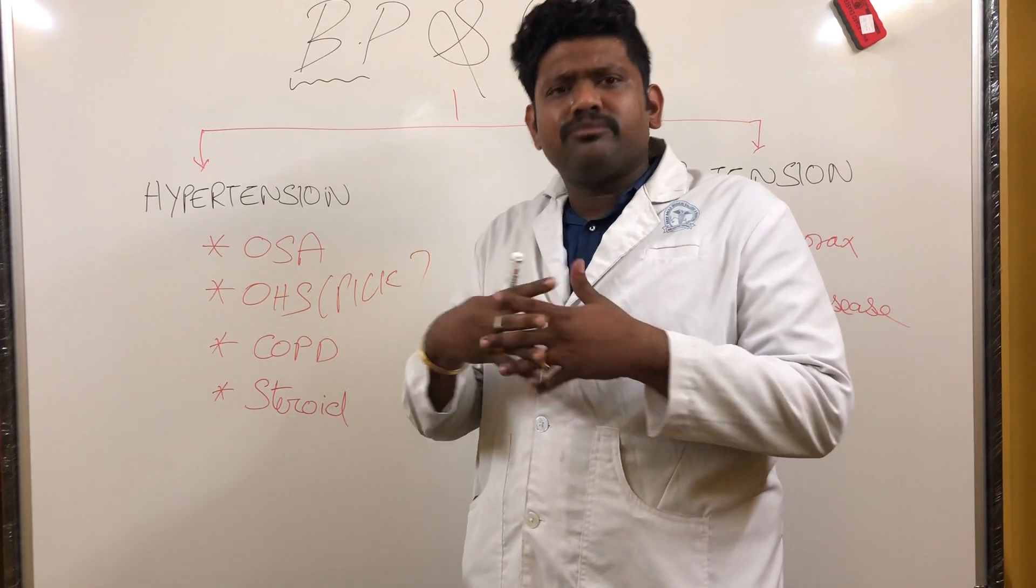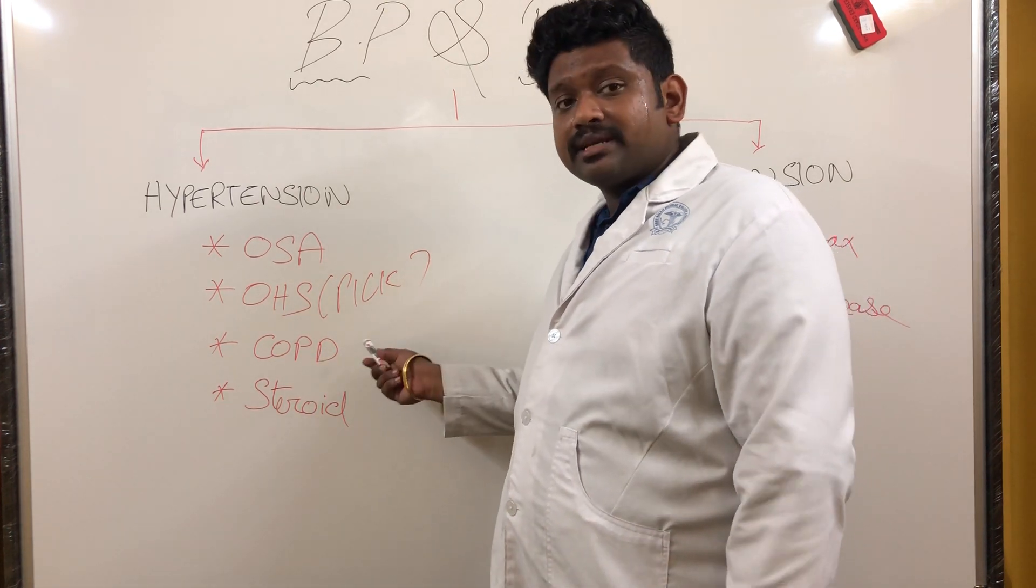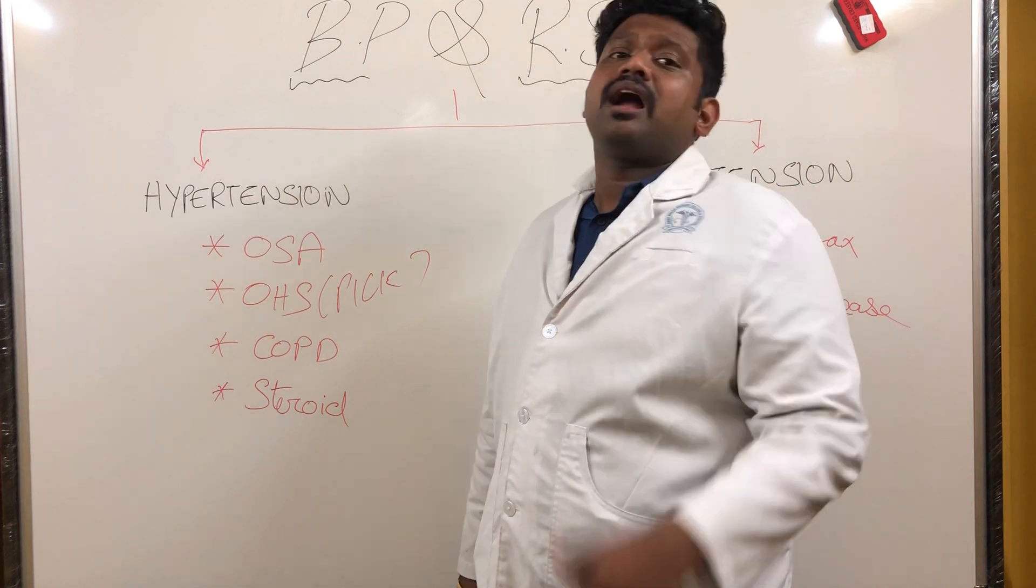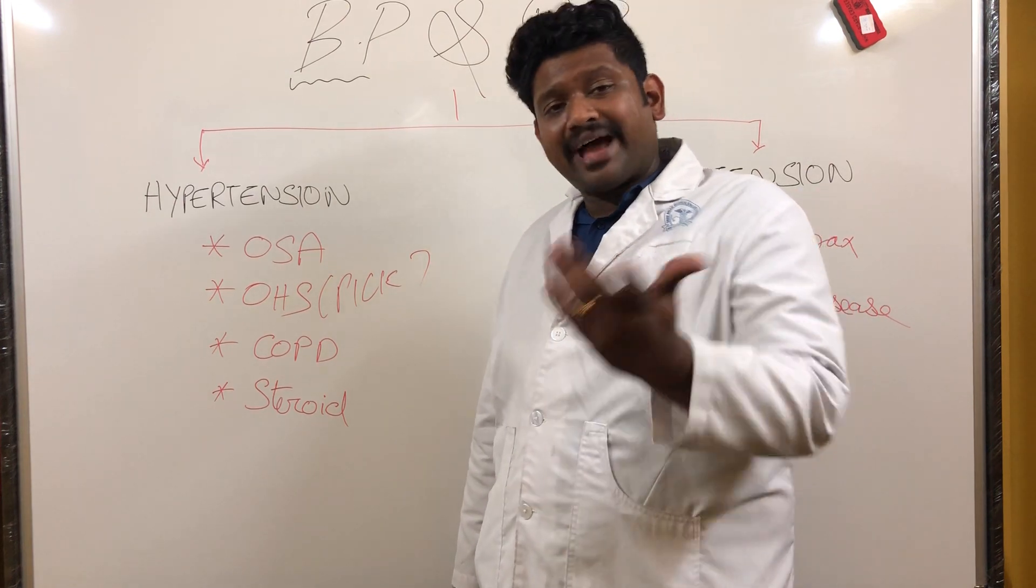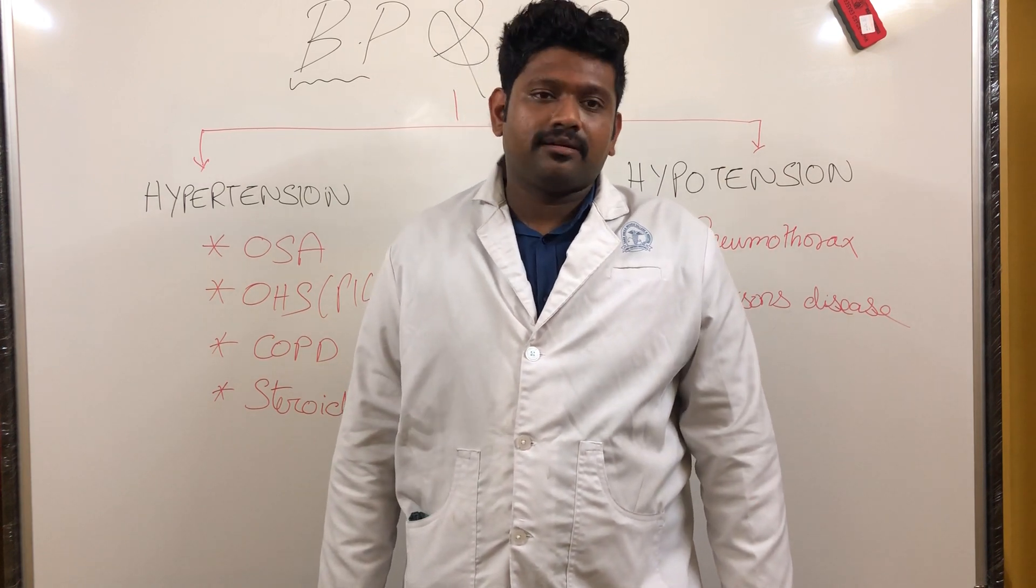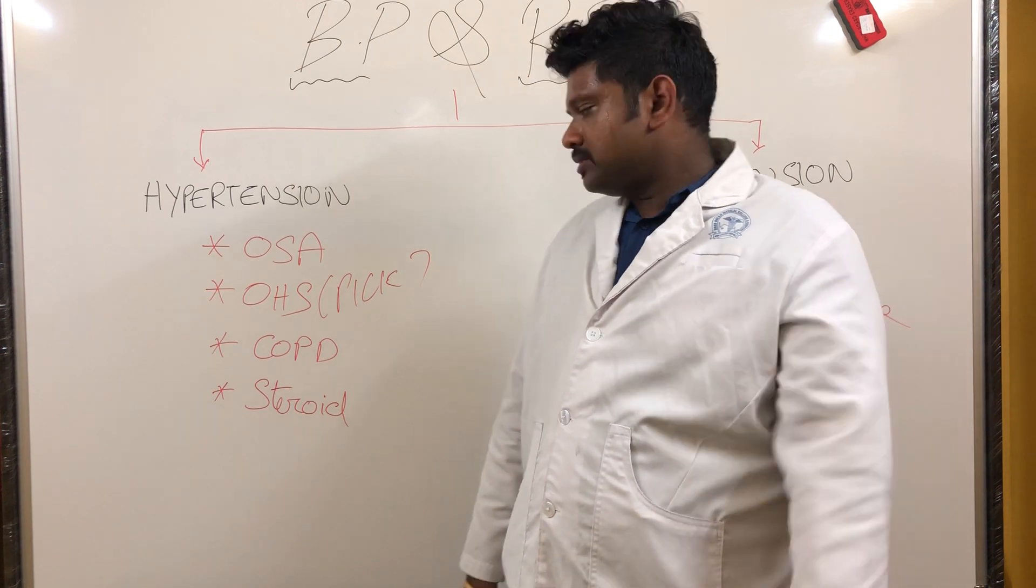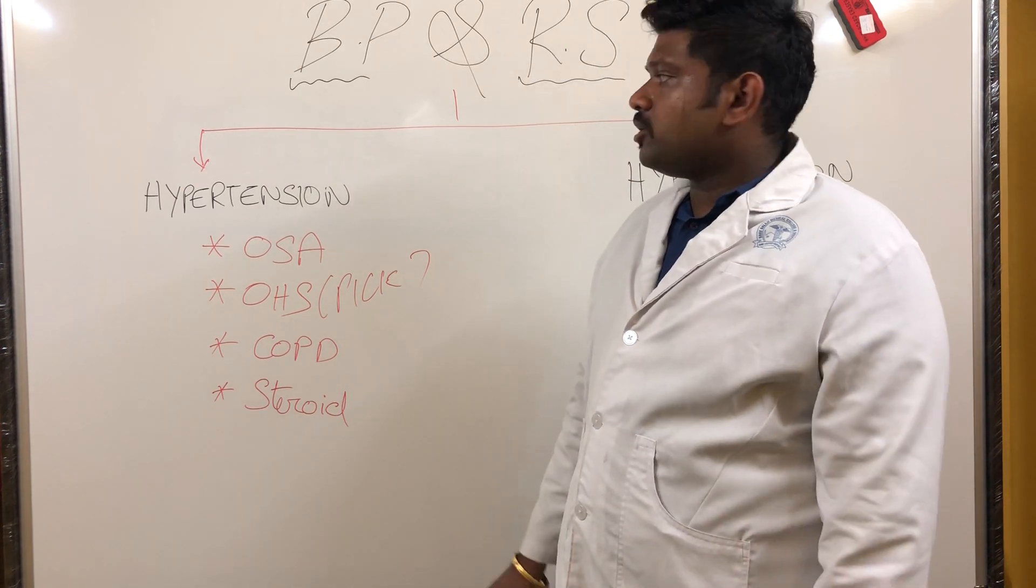COPD and hypertension are seen together a lot. These COPD patients with hypertension have more chance to develop heart failures and arrhythmias. What's the most common arrhythmia in COPD? MAT - multifocal atrial tachycardia - followed by atrial fibrillation.